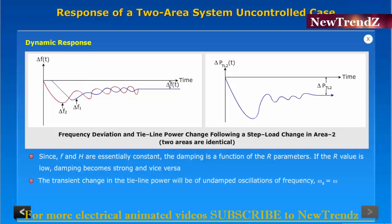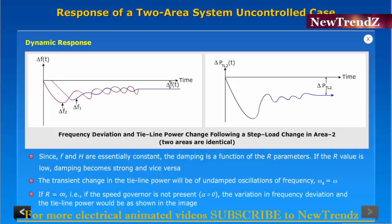The transient change in the tie-line power will be of undamped oscillations of frequency ωs equal to ωn if R equal to infinity, that is if the speed governor is not present, alpha equal to 0.